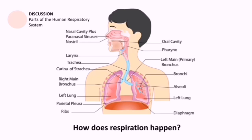Air is going to first enter through the nostrils — or it can also enter through the oral cavity. Then air is going to proceed towards the pharynx, which is at the back of the throat. Then it proceeds to the larynx, which is also known as our voice box. You are able to make sound using the larynx because it interacts with the air that you are breathing — if you are not inhaling or exhaling, you cannot produce any sound.